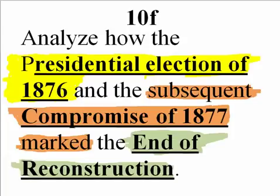The election of 1876 resulted in conflict, which was then compromised in the House of Representatives, and that brought an end to Reconstruction. We have met our objective: analyze how the presidential election of 1876 and the subsequent Compromise of 1877 marked the end of Reconstruction. Ask questions in class, watch this video again, and good luck on the quiz and the EOCT.